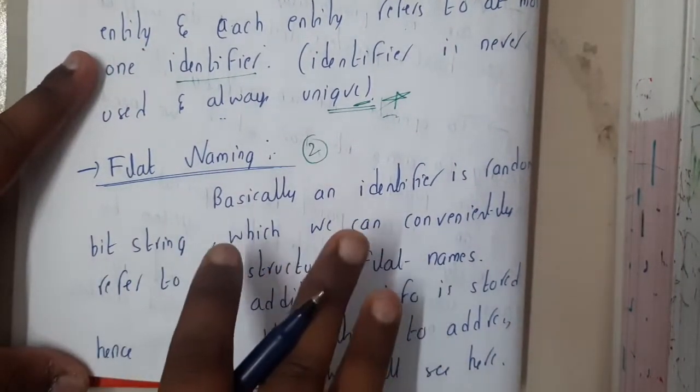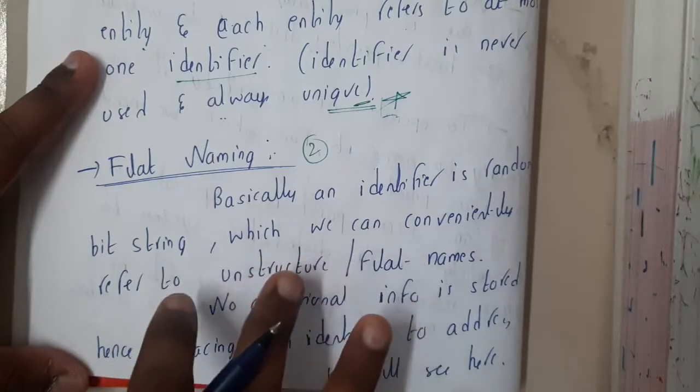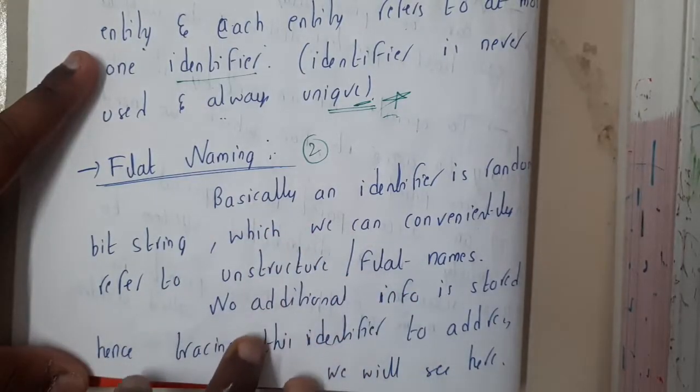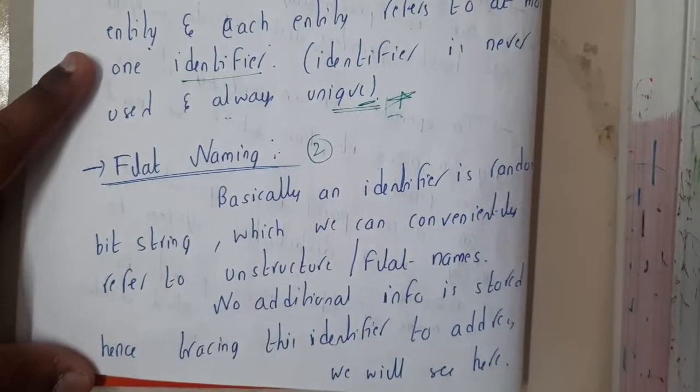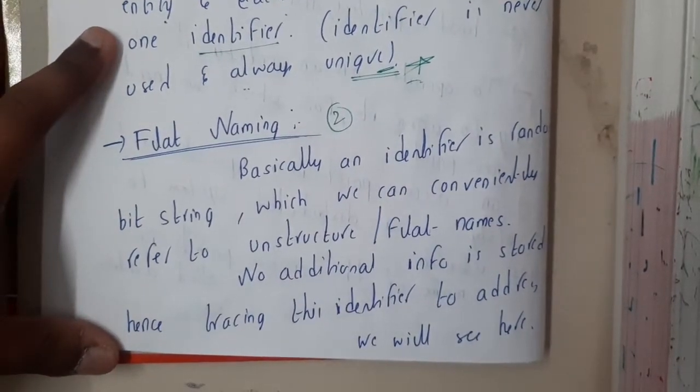So in the next lecture, we will be discussing flat naming. Okay, so in naming, we are having three different things, like flat naming, structured naming, and unstructured naming. So in the next lecture, we will be discussing flat naming, that is nothing but unstructured naming. So let us meet in the next lecture. Thank you, thanks for watching.